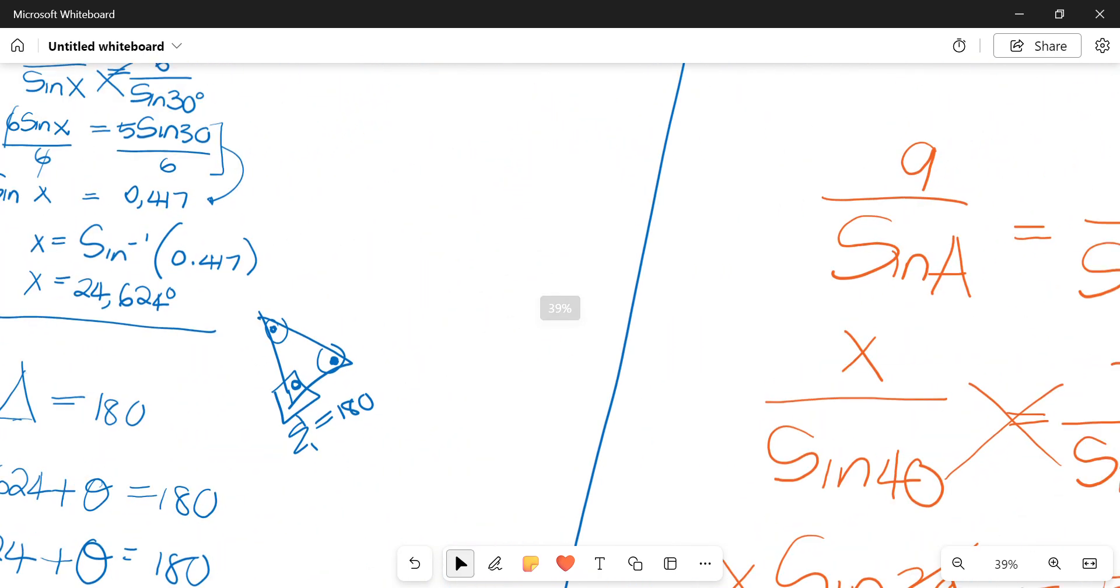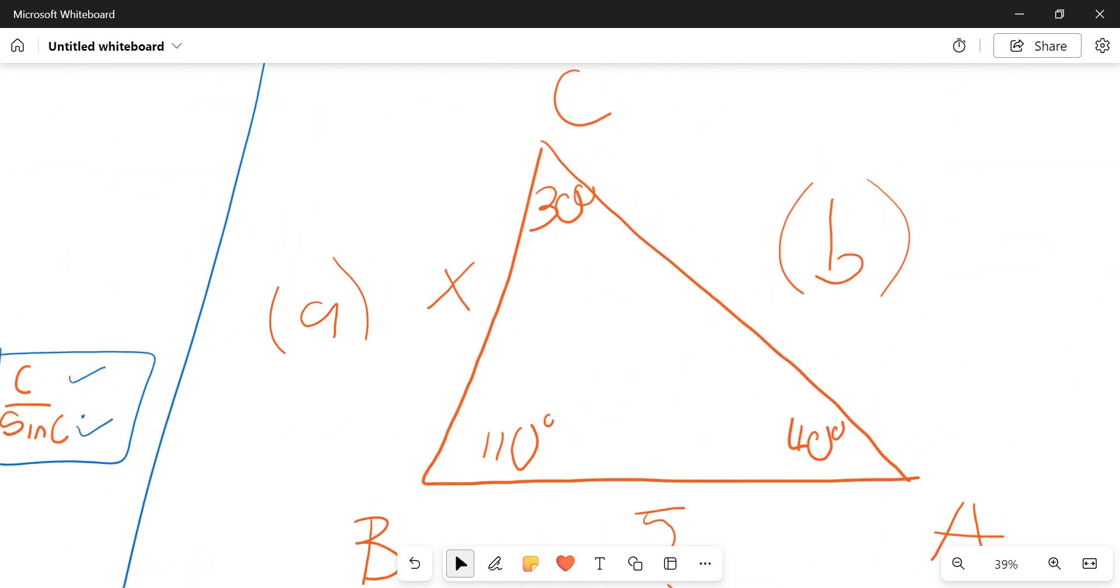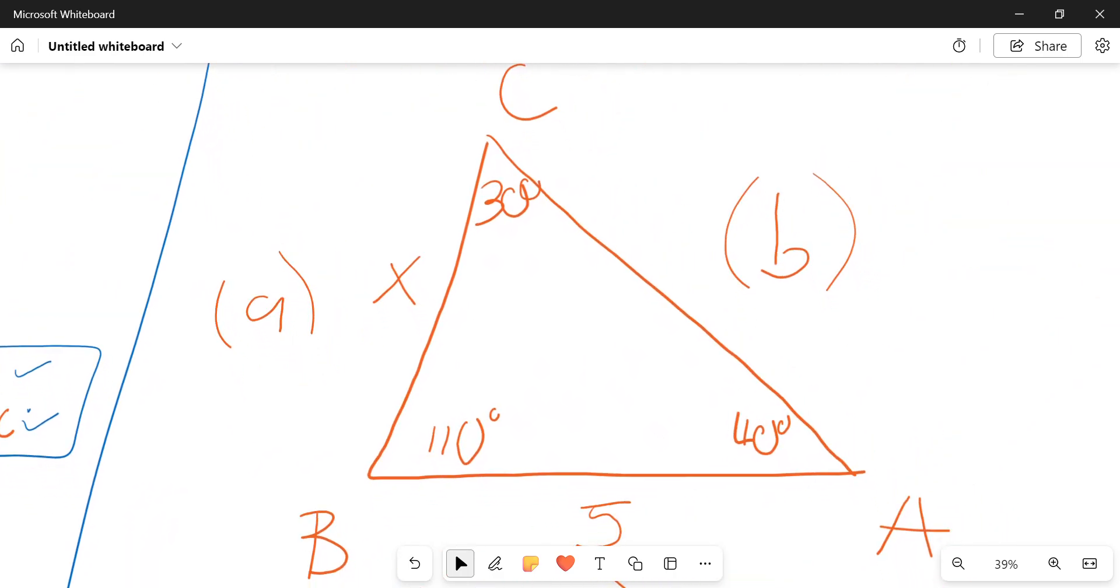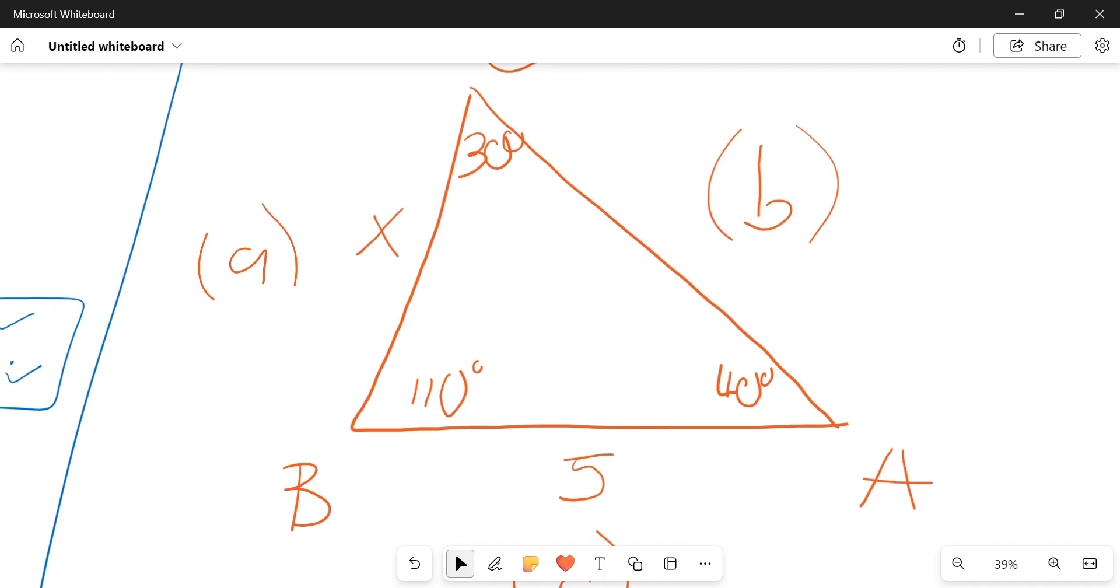That is method A. I hope it makes sense. If it doesn't, feel free to let me know. Method number B is when we are essentially given all the included angles and we're given a known length, one known length. And we're essentially trying to calculate an unknown length.